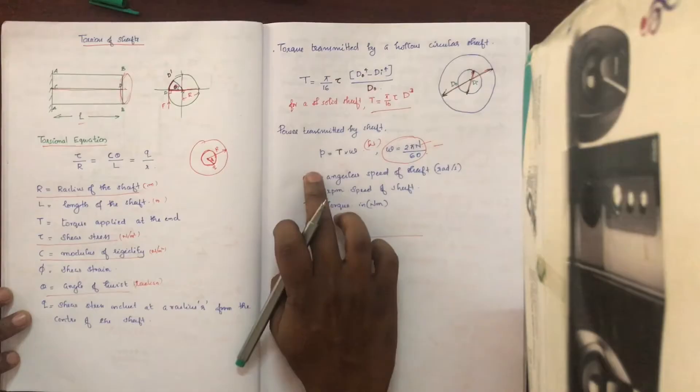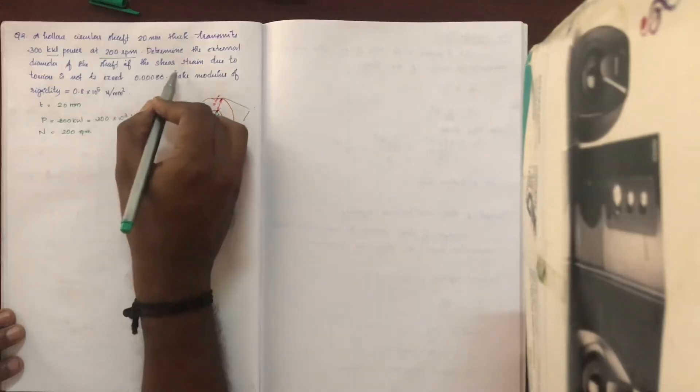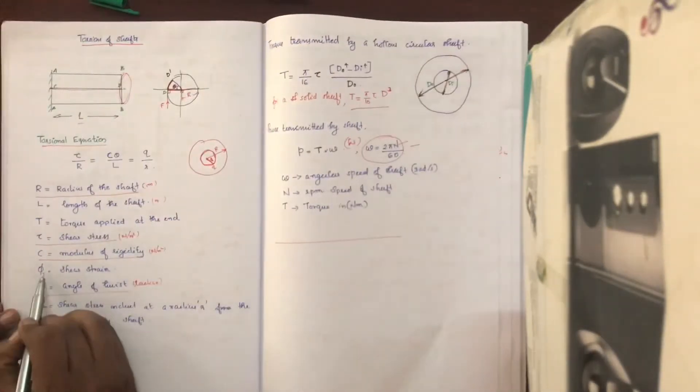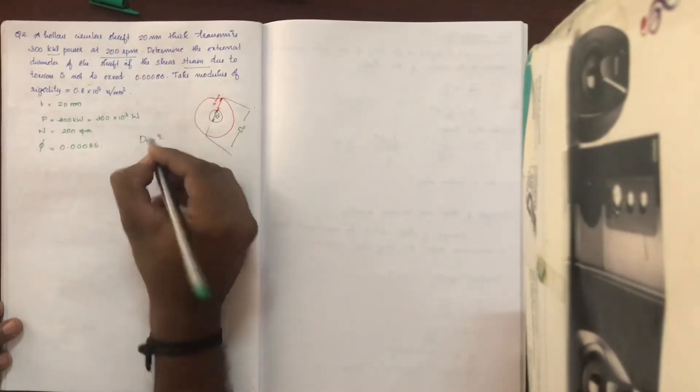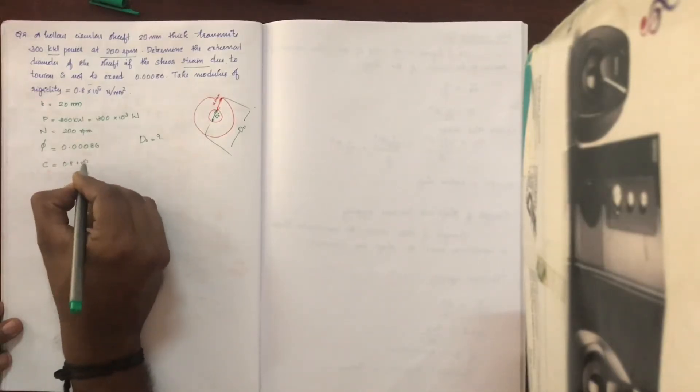We will use the equation relating power and torque. We need to determine the external diameter of the shaft, given that the shear strain due to torsion must not exceed 0.00086. The modulus of rigidity C is equal to 0.8 into 10 raised to 5 N/m².